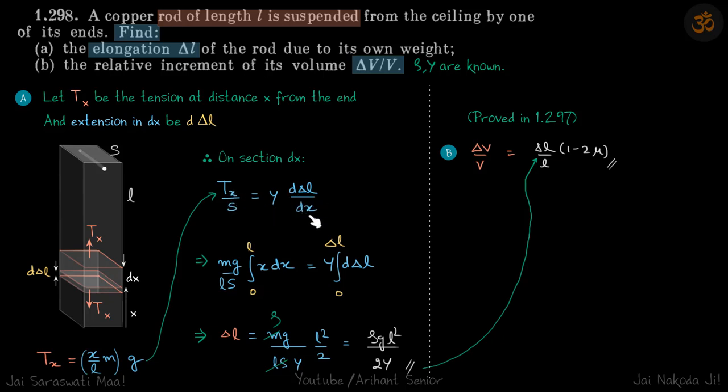What will be the tension at a distance x? This tension is pulling up this part of the rod, and the mass of this part of the rod is x by L into m. So the weight supported after this point is x by L times m times g. That is Tx. We'll put that and now we'll get a relation between x and delta L.